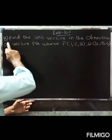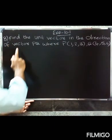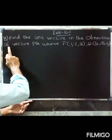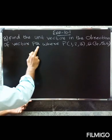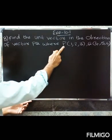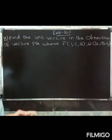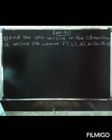Friends, now this is exercise 10.1, 8th question. Find the unit vector in the direction of vector PQ where P(1, 2, 3) and Q(4, 5, 6).